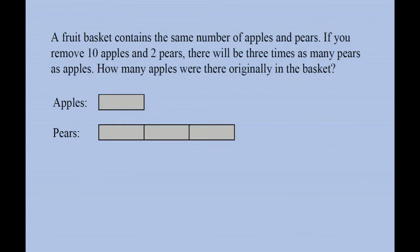Now, let's say this is a stack of pears, and I'm going to add two more pears here, and 10 more apples here. The two stacks should match because the question says the fruit basket contains the same number of apples and pears. So after I add 10 apples and two pears, the stacks should be the same height. I'm going to use a small green disc to represent one pear, and a small red disc to represent one apple.